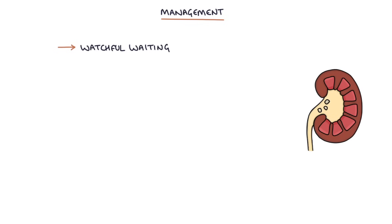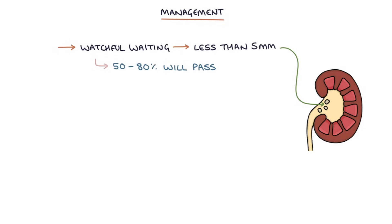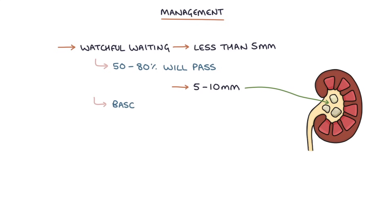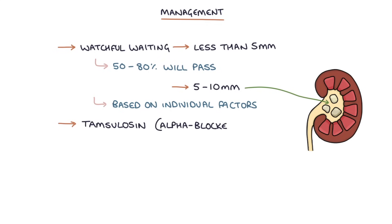Watchful waiting is usually used for stones less than 5mm in size, as there's a 50–80% chance these will pass without any intervention. It may also be suitable for stones of 5–10mm depending on individual factors. It can take several weeks for the stones to pass. Tamsulosin, which is an alpha blocker, can be used to help aid the passage of stones.